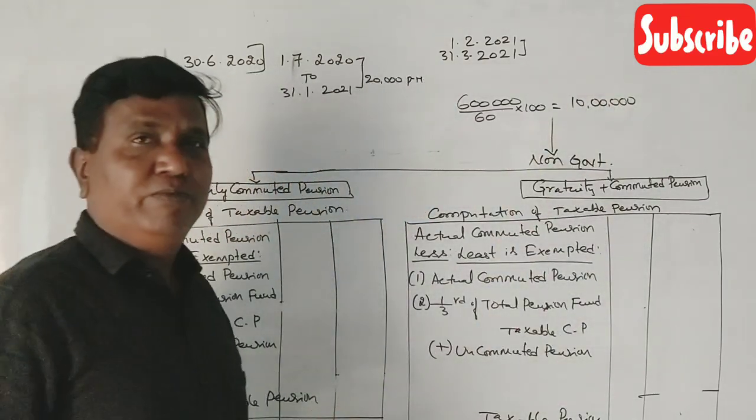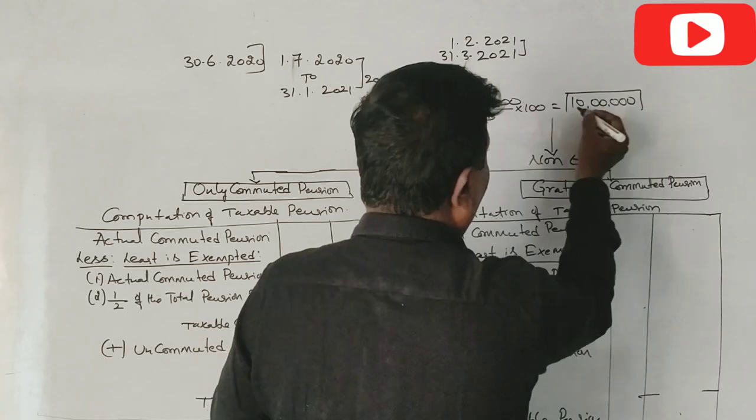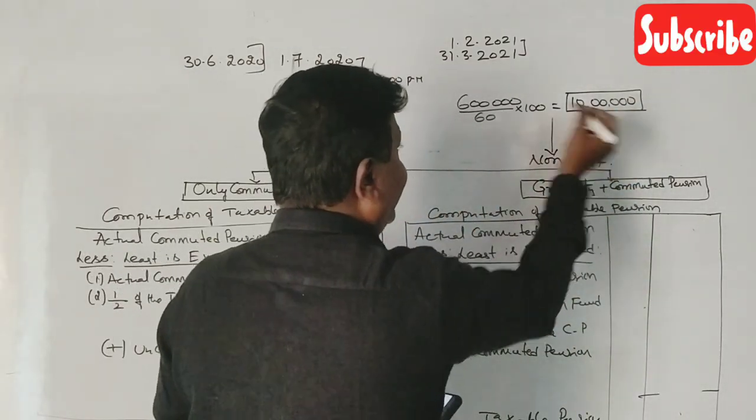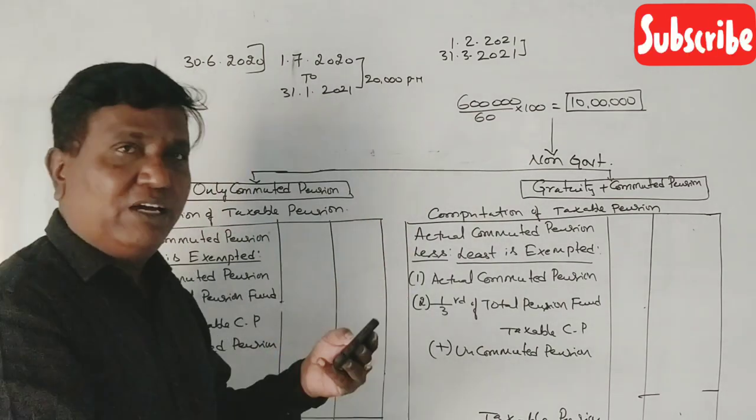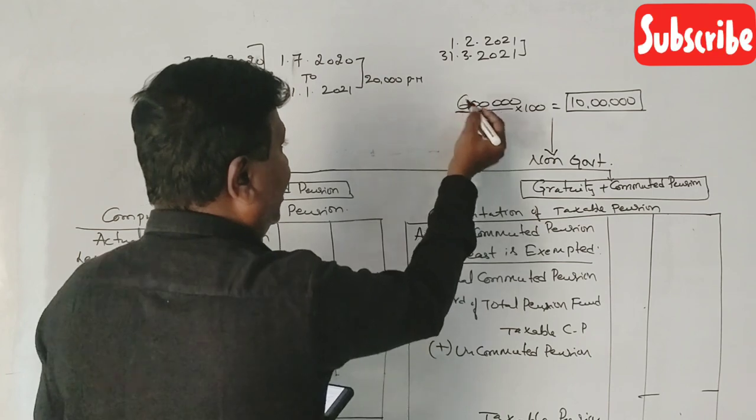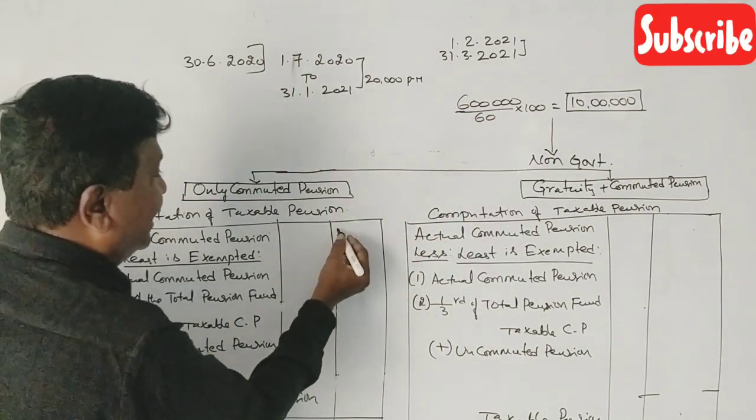The total pension is 10 lakh rupees in a rating. So 60% will be 6 lakhs. 6 lakh rupees.